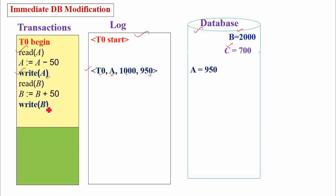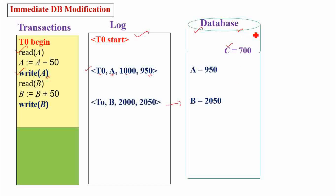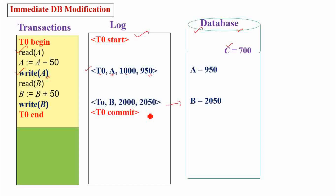When write operation is performed on B, the corresponding log record must be made into the log, and immediately after making this update in the log, the update must be made into the database. Now B value becomes 2050. Next, T0 end is executed, indicating partial commit of the transaction. Immediately, the record T0 commit is kept into the log, and at this point the transaction is successfully committed.